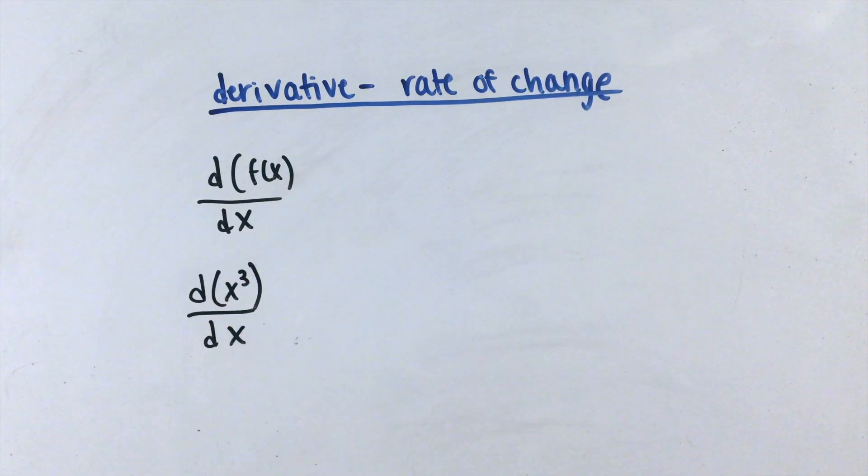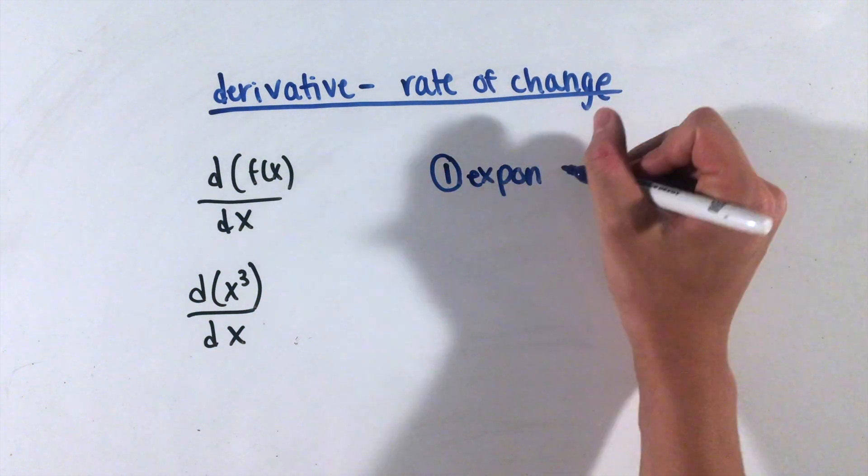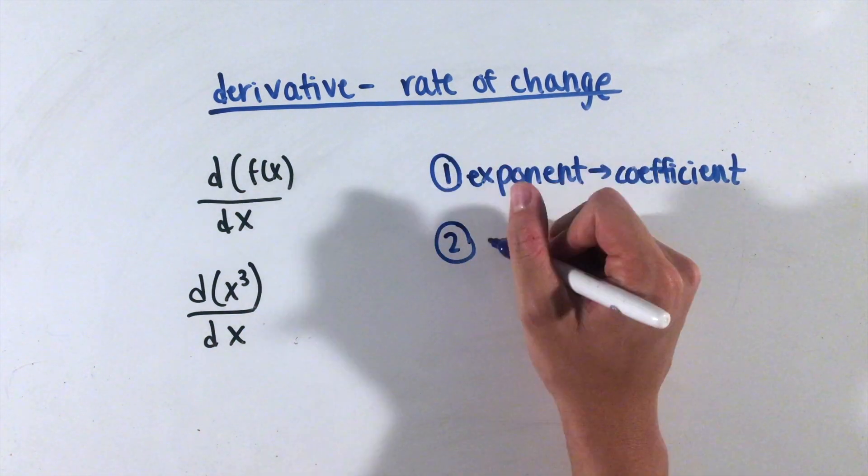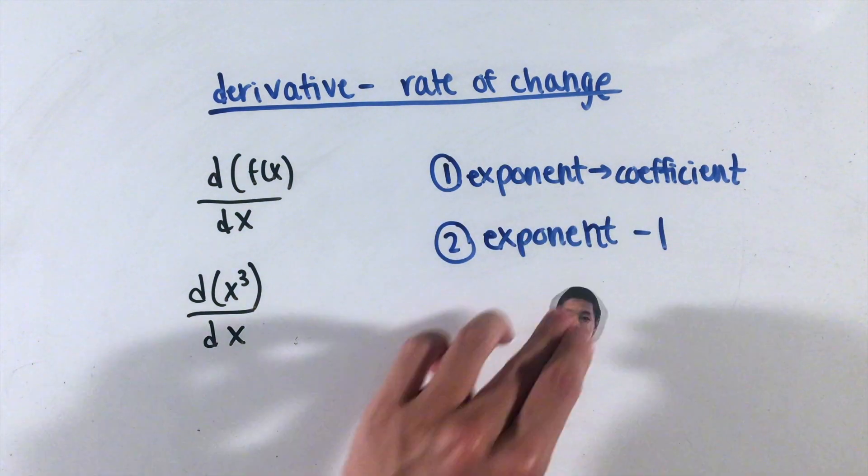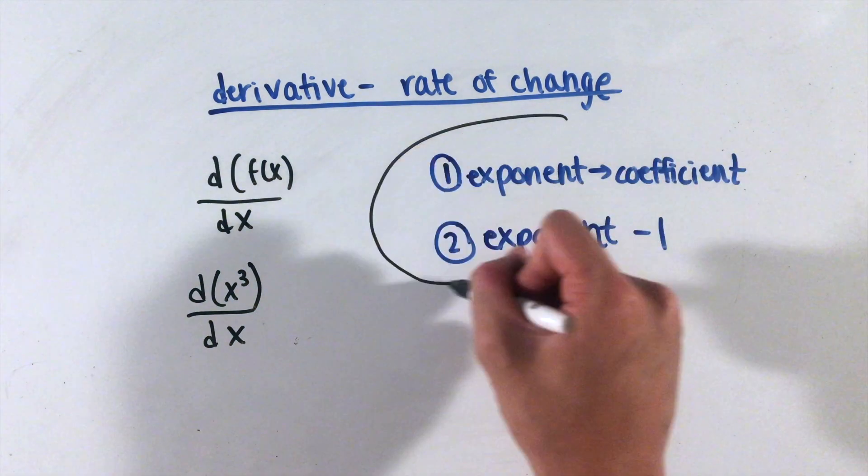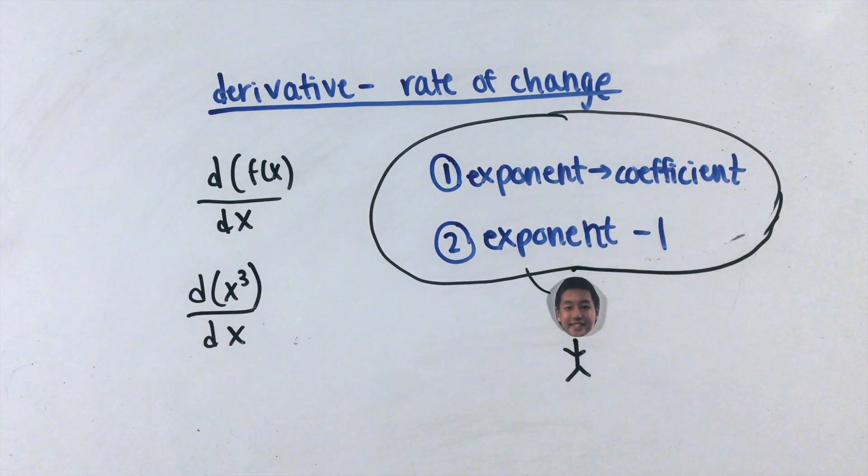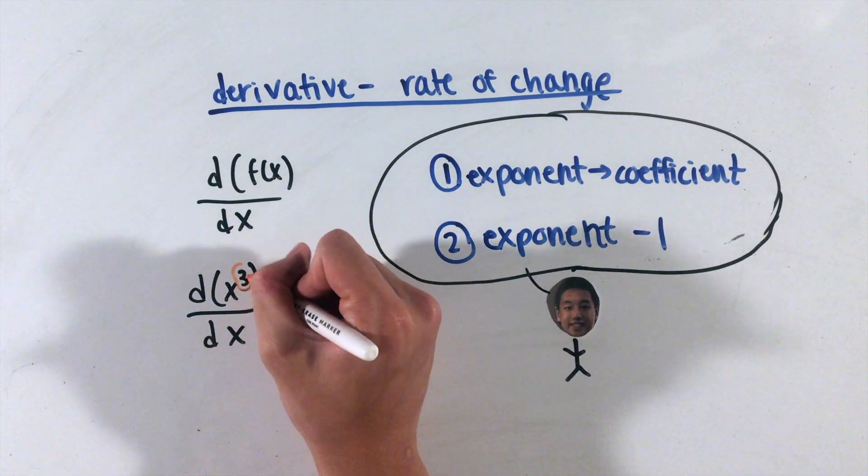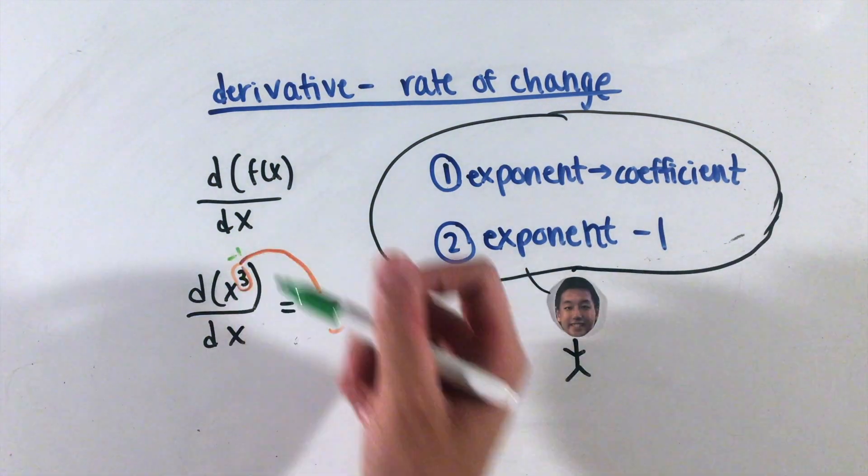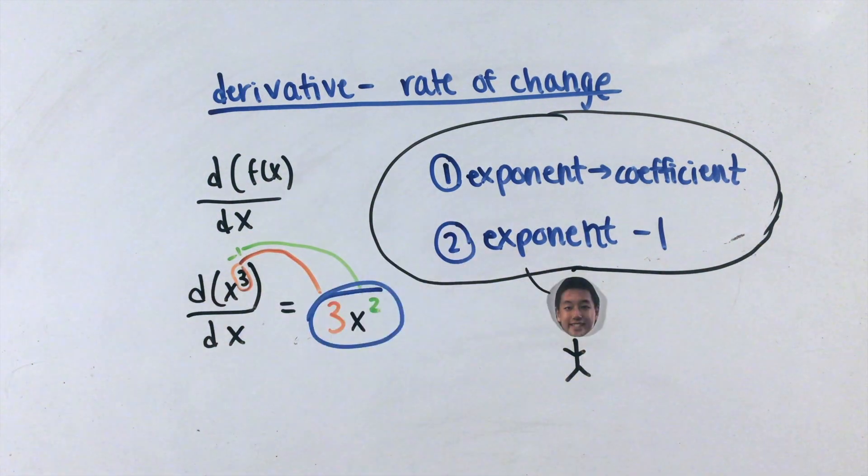To take a derivative of a function, say the derivative of x cubed with respect to x, use the power rule. The exponent power becomes a coefficient, and the exponent decreases by 1. Here, the derivative of x cubed with respect to x is equal to 3 times x squared, which actually represents a slope, or rate of change, of the x cubed graph at any point x.